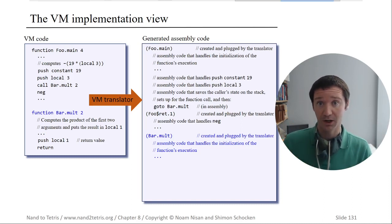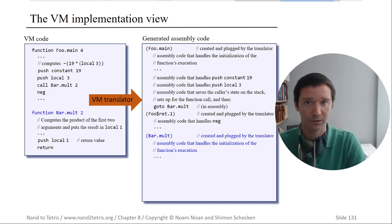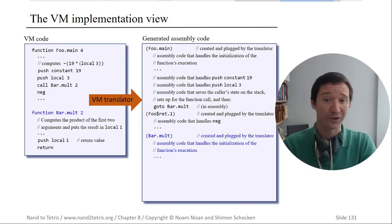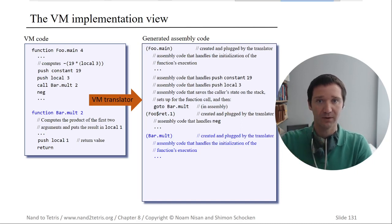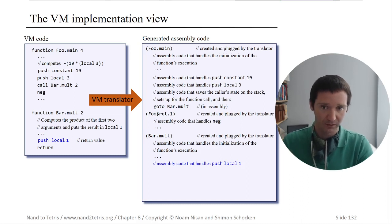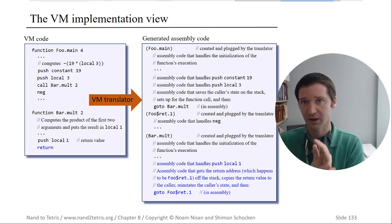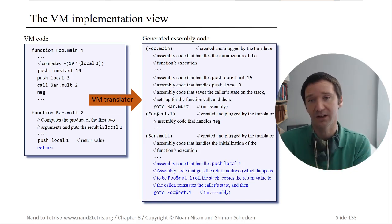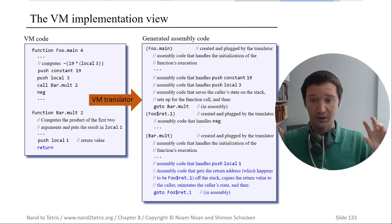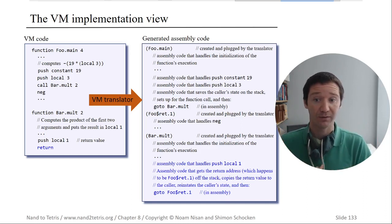Now it's time to assemble bar.mult. We generate the label for the function by wrapping bar.mult in parentheses. Then we generate code to initialize its two local variables — just placing two zeros on the stack and moving some pointers. After handling the local variable initialization, we process the function body and then get to the function return, which is a bit tedious but manageable if you follow the book.